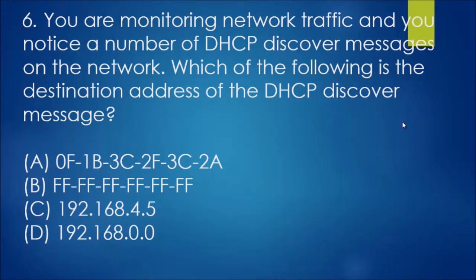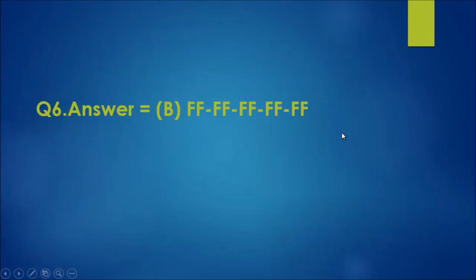For question six, you are monitoring network traffic and notice a number of DHCP discover messages. What is the destination address of a DHCP discover message? DHCP discover is a broadcast message at layer two. The broadcast MAC address is all F's, so the answer is FF:FF:FF:FF:FF:FF.